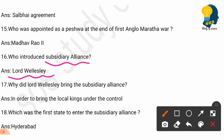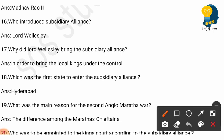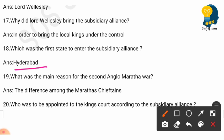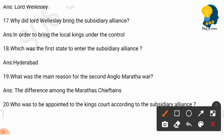Question 16: Who introduced the Subsidiary Alliance? Answer: Lord Wellesley. Question 17: Why did Lord Wellesley bring the Subsidiary Alliance? Answer: In order to bring the local kings under British control. Question 18: Which was the first state to enter the Subsidiary Alliance? Answer: Hyderabad.